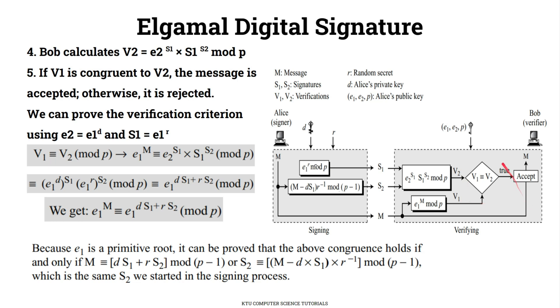If V1 is congruent to V2 mod P, then the message is accepted; otherwise the message is rejected.